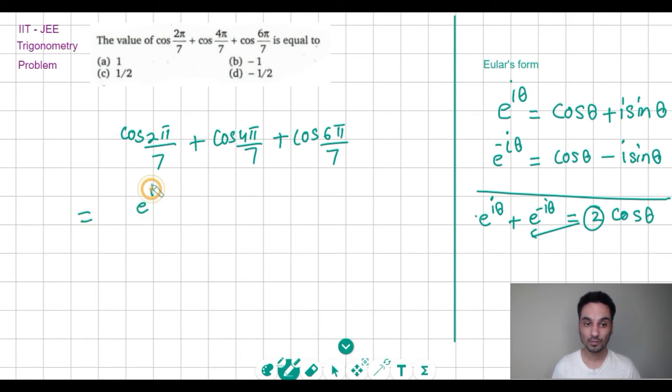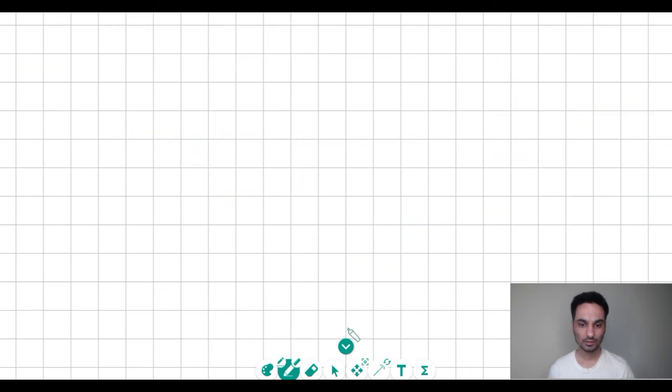By using this concept, I can write each of these cos terms as (e^(i·2π/7) + e^(-i·2π/7) + e^(i·4π/7) + e^(-i·4π/7) + e^(i·6π/7) + e^(-i·6π/7)), and everything is divided by 2. So I can divide the whole thing by 2.